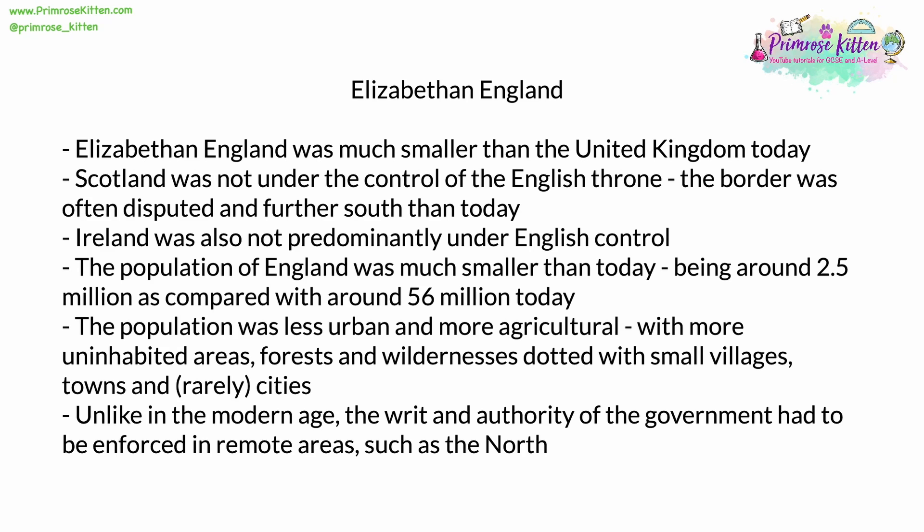England was much smaller than today — around 2.5 million people, compared with somewhere around 56 million today. The population was less urban, fewer people lived in towns and cities, and much more agricultural. There were more uninhabited areas and wildernesses, vast forests dotted with small villages. There were towns and very rarely cities, but even these differed from what we would expect today. During the reign of Elizabeth, Norwich was the second largest city in England, whereas today it is Birmingham.